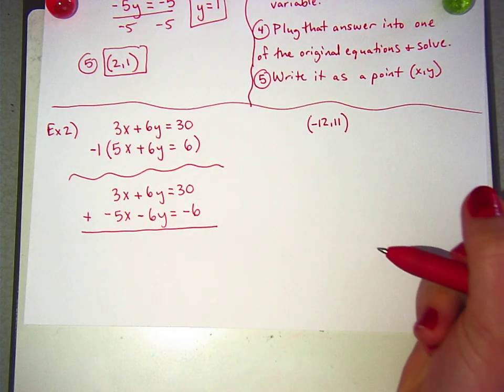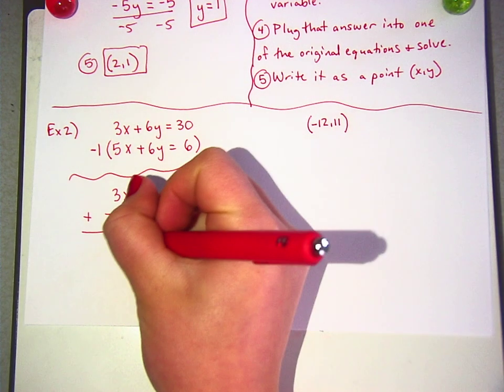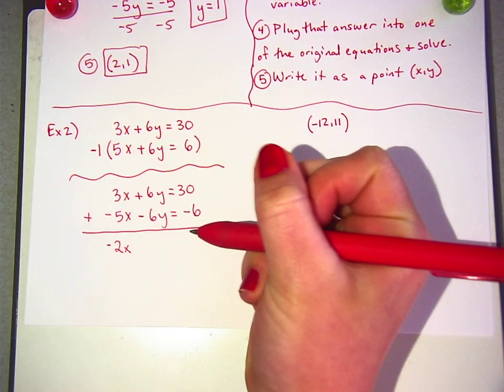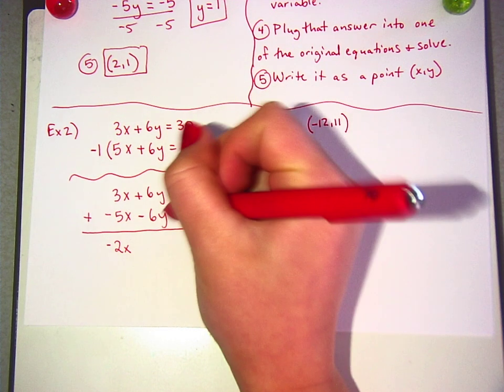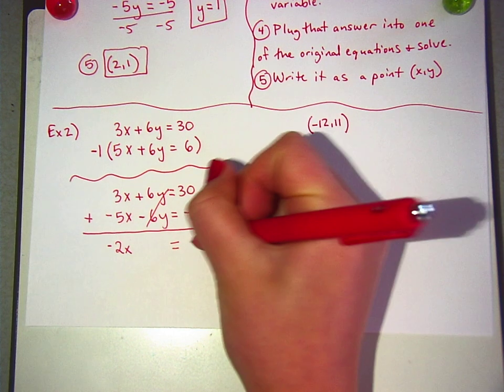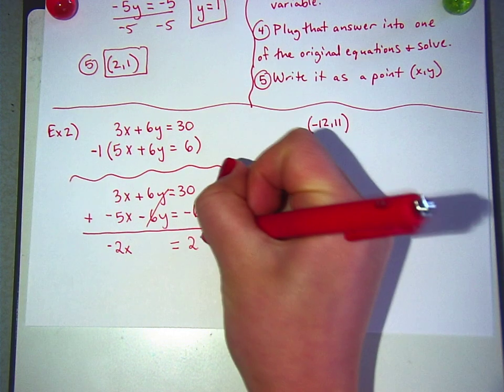So 3x plus a negative 5x is negative 2x. And then those cancel out, and then it's equals, what was that? I forget. 24? Yeah, negative 24, or just 24.